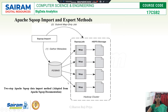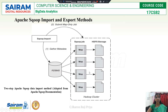Apache Sqoop is used to perform data transfer between HDFS and relational databases. There are two steps in transferring data between HDFS and the relational database. The first step is Sqoop examines the DBMS and gathers the metadata. After gathering the metadata, Sqoop submits a map-only job to the cluster. These are the two steps used to transfer data between RDBMS and HDFS.